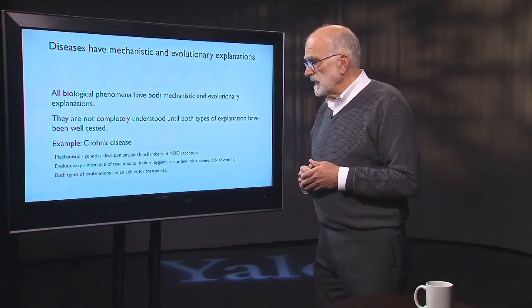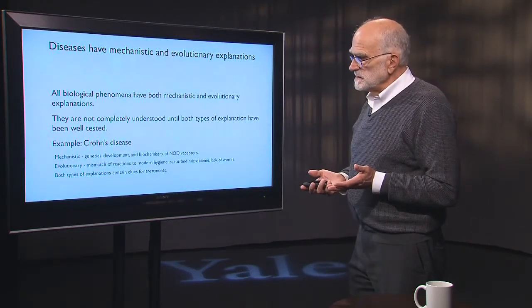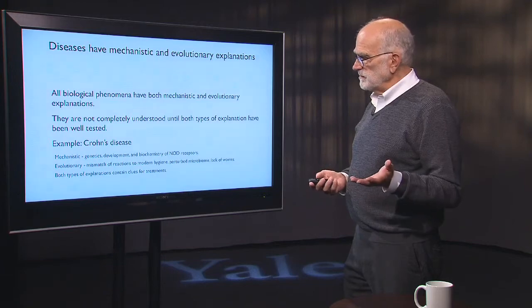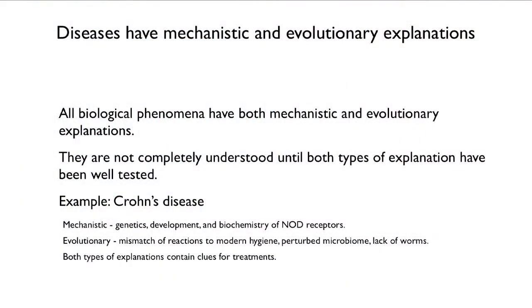Here's an example: Crohn's disease. The mechanistic explanation of Crohn's disease is through genetics, development, and biochemistry. The evolutionary explanation is that it results from a mismatch of reactions to modern hygiene that leads to a perturbed microbiome and a lack of worms. In other words, it didn't used to be that way, and now we're responding inappropriately. Both kinds of explanations give us hints for how to treat the disease — they aren't antagonistic, they're complementary.